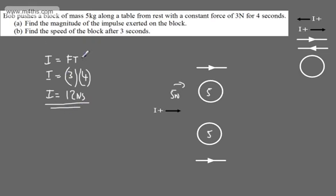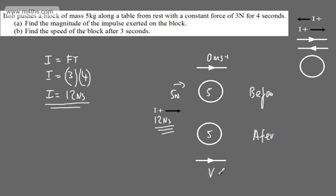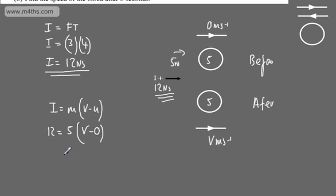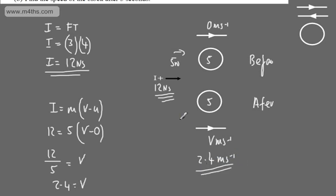Part B: find the speed of the block after 3 seconds. The impulse is 12 newton seconds. The block starts from rest so the initial velocity is 0 m/s. Using I = m(v − u): 12 = 5 × (v − 0), so 5v = 12, giving v = 2.4 meters per second. That is the speed of the particle after the 3 seconds.